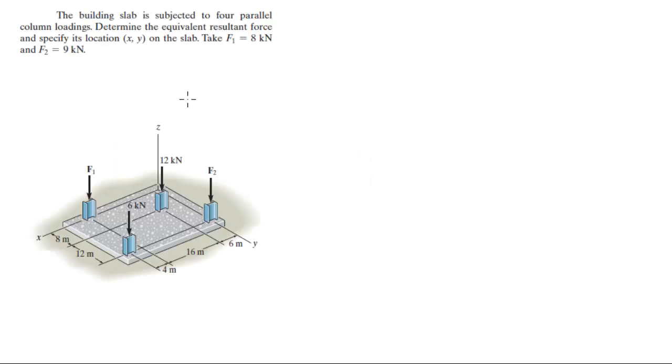For more videos visit ForTheSakeOfEducation.com. Alright guys, let's do this problem where you have this assembly right here and you have four forces acting on it. They want you to find the equivalent force and specify its location in the x and y plane. And then take F1 is equal to 8k and F2 is equal to 9k.